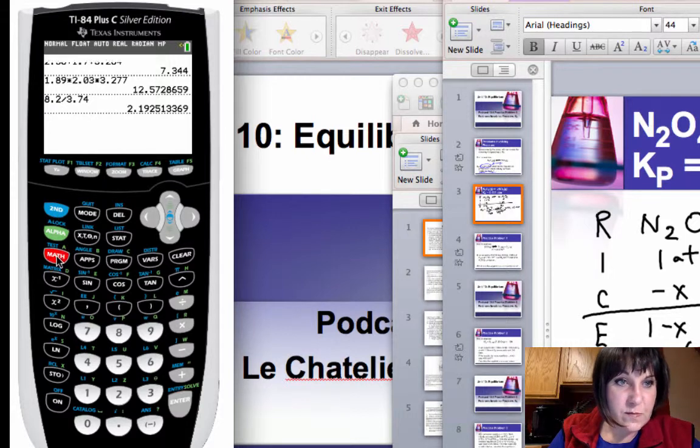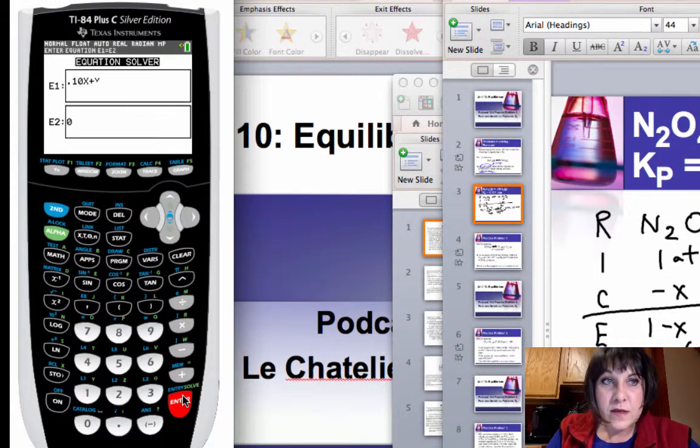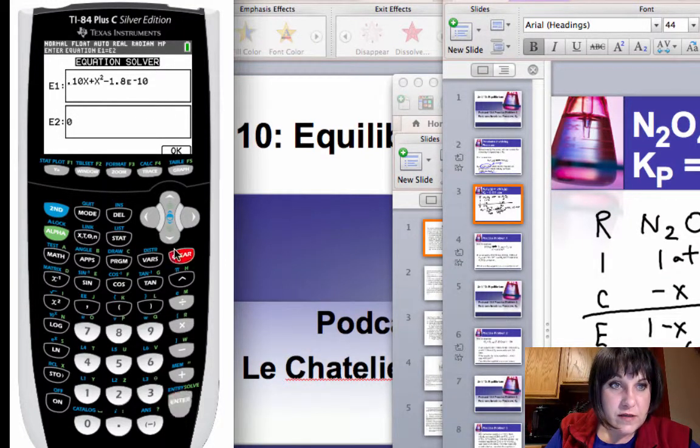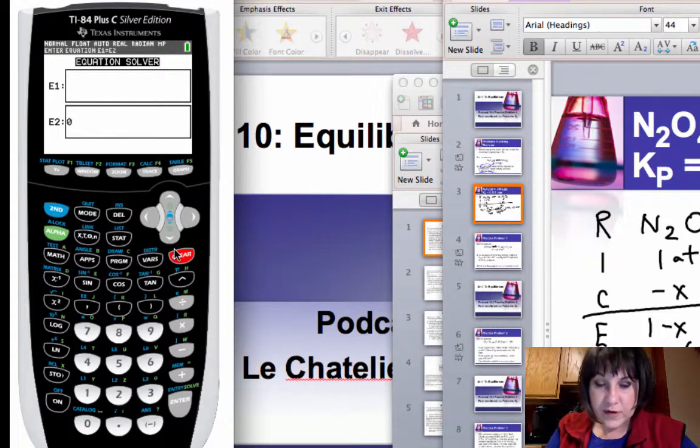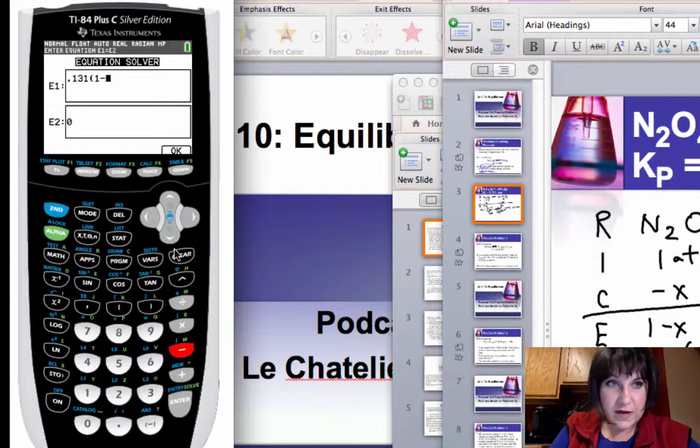And mine is Math B, yours might be Math 0 if you have an 83. All right, clear out the equation that was in there before. And we're going to type it exactly as it is. So 0.131, parentheses, 1 minus x, close parentheses, minus 2x squared.